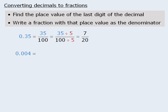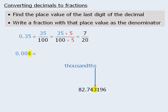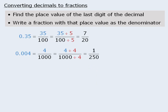Let's try another one. The last digit here is 4, and it is in the thousandths position. To write this as a fraction, we ignore the decimal point and insert the number in the numerator and the place value in the denominator. We can then simplify by dividing top and bottom by 4 to get 1 over 250. So the decimal 0.004 equals the fraction 1 over 250.